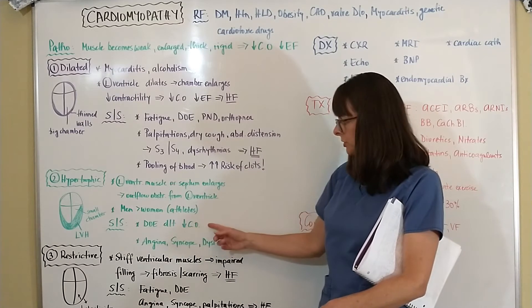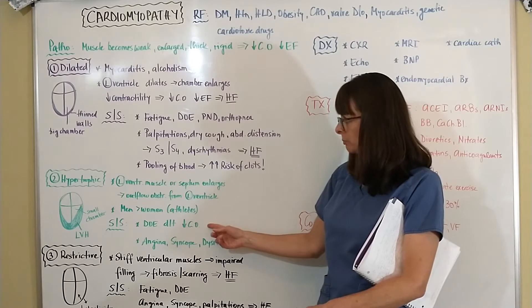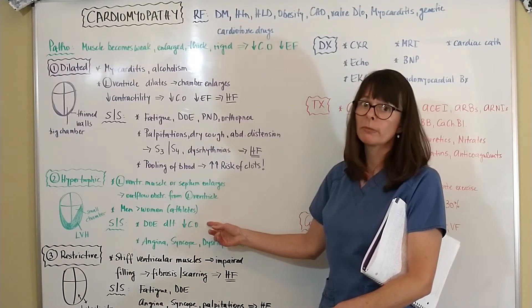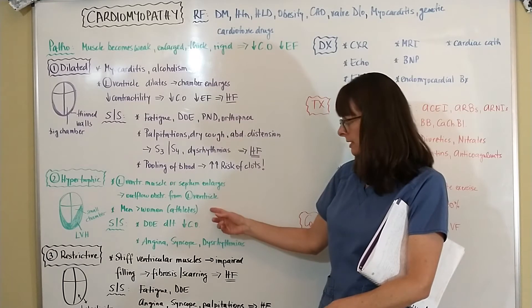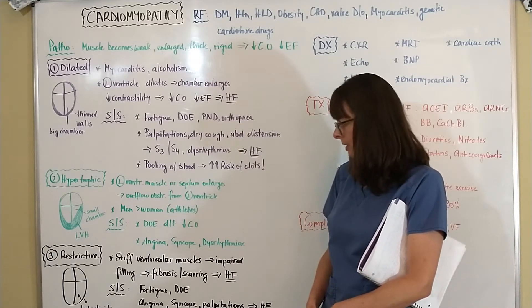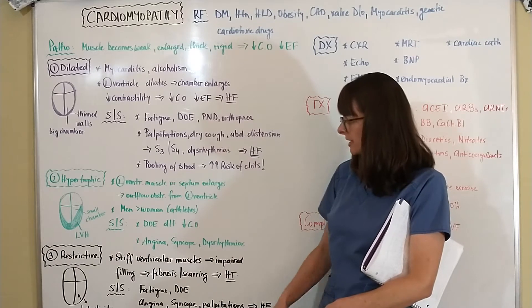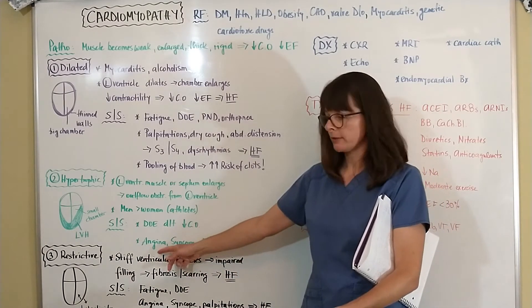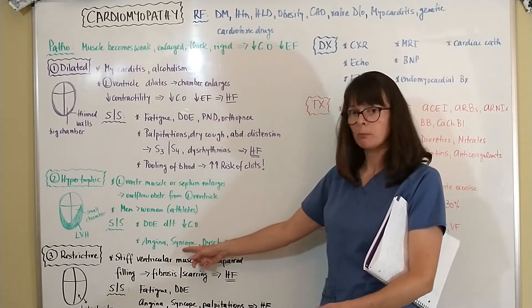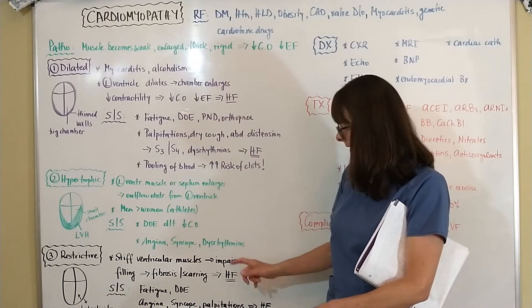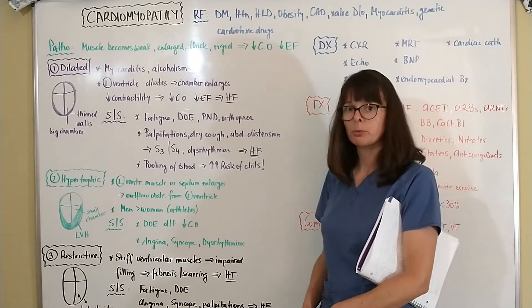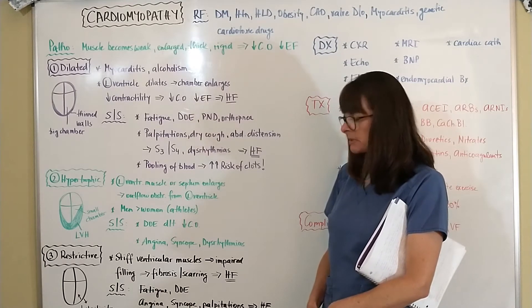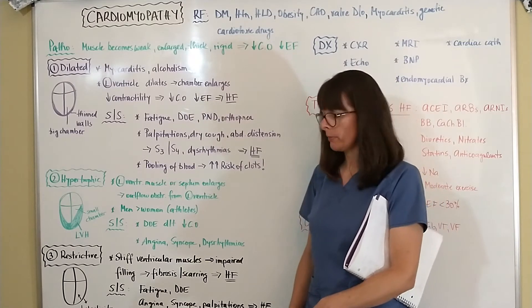Signs and symptoms of hypertrophic cardiomyopathy include dyspnea on exertion due to decreased cardiac output, which can develop quickly. The patient might have no symptoms and then suddenly die during activity. They may also experience angina, syncope or presyncope, and dysrhythmias as the heart is not perfusing itself well.